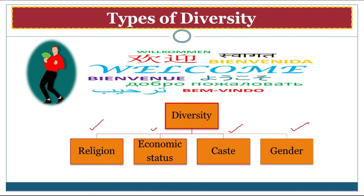Next is caste-based diversity. Caste means people are divided into different sub-parts of religions. In Hinduism, the four castes are Brahmins, Kshatriyas, Vaishyas, and Shudras. In ancient times people were divided by caste based on occupation, but later the caste system became hereditary and a person's role in society was decided by the caste they were born into, which was wrong. After independence, the government has made different laws and given different rights to citizens to establish equality.